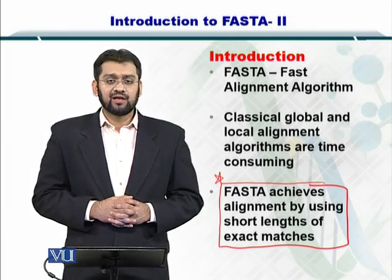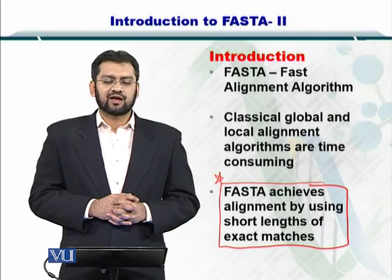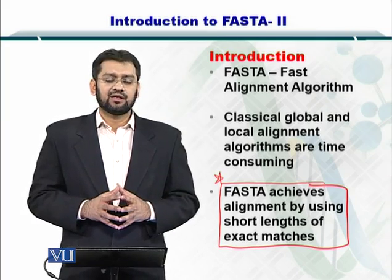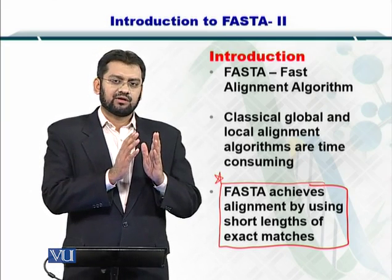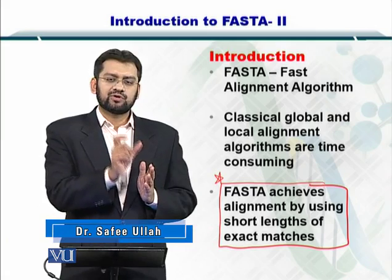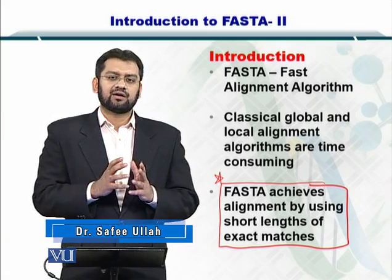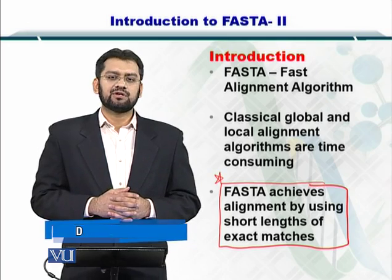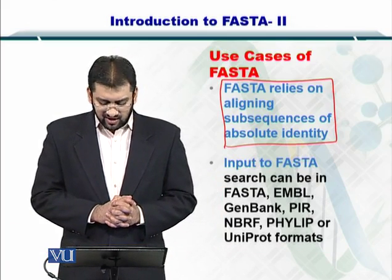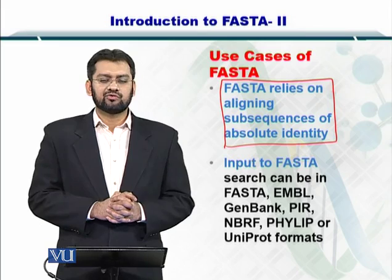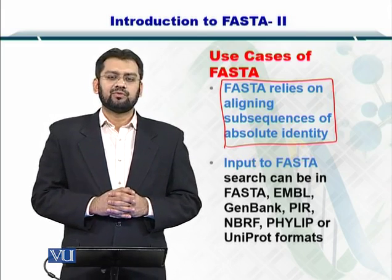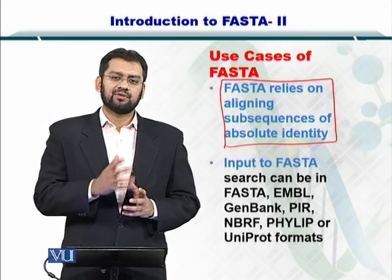FASTA achieves alignment by using short lengths of exact matches. An exact match means a hundred percent similar sequence between the database and your query. Short sequences of such matches are collected, and then an alignment procedure is performed on the resulting comparisons. FASTA relies on aligning these subsequences of a hundred percent similarity, which biases the algorithm towards these matches and therefore speeds up the search.